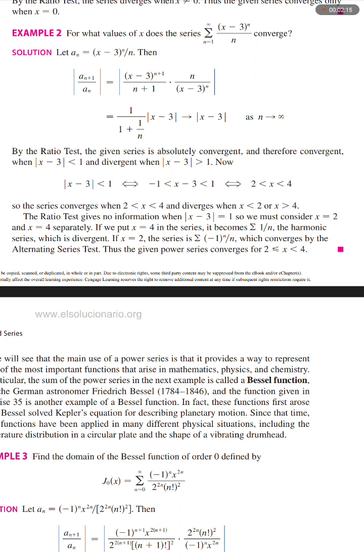So the series converges when 2 < x < 4 and diverges when x < 2 or x > 4. The ratio test gives no information when |x-3| = 1, so we must consider x = 2 and x = 4 separately.